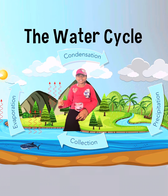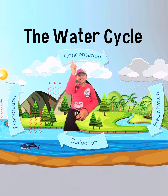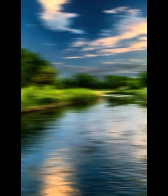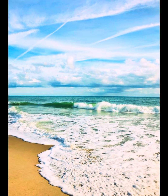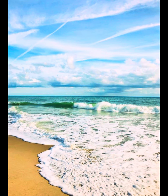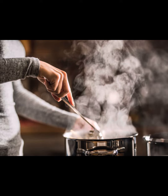The water cycle has four stages: evaporation, condensation, precipitation, and lastly collection. When the sun heats up the rivers, oceans, and lakes, the water goes up into the air and it's called evaporation. If you want to see how the vapor looks, we can even see it while cooking at home.